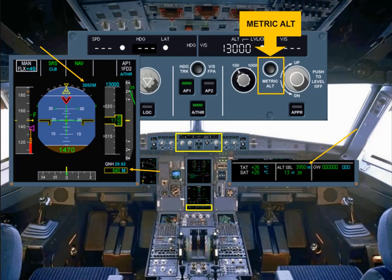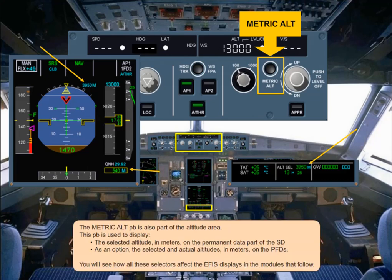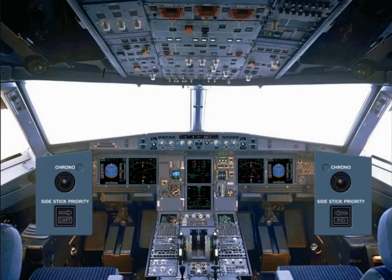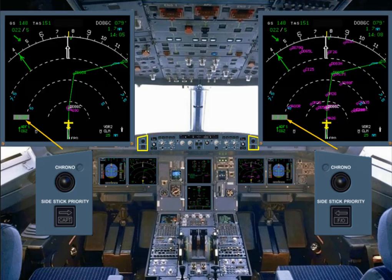You will see how all these selectors affect the EFIS displays in the modules that follow. The two chrono push buttons located on the glare shield control the associated chronometer display on the NDs. The push buttons operate like a normal stopwatch.